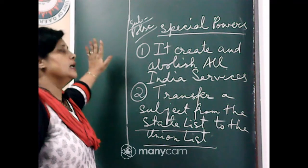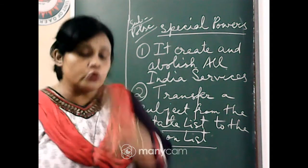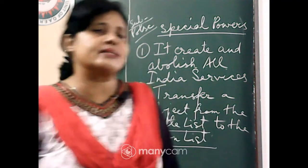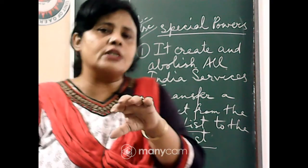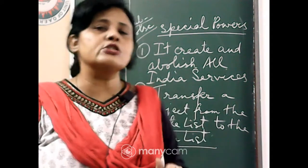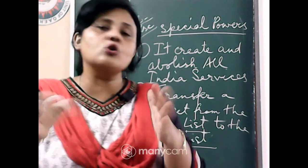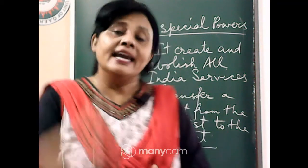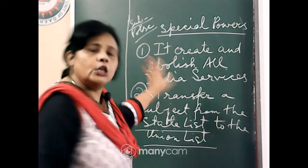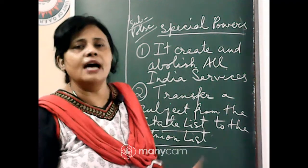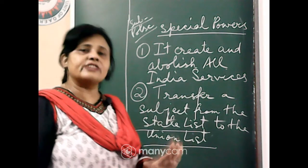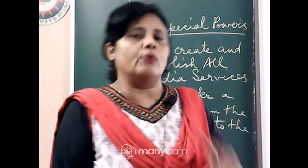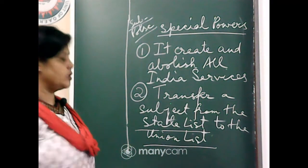Together with these, there is another special power I have already mentioned: the Rajya Sabha is a quasi-permanent chamber — it is not dissolved all at once. So whenever the Lok Sabha has been dissolved and is not functioning, the Rajya Sabha carries on the functions of the government until the next Lok Sabha is elected. These special powers make the Rajya Sabha not completely powerless.